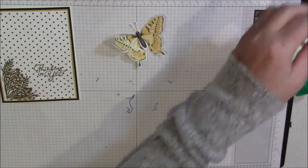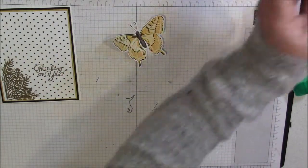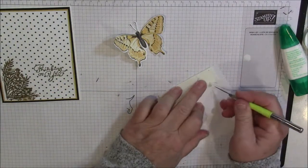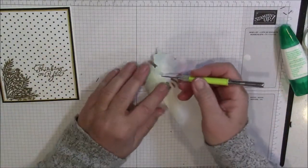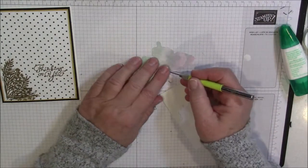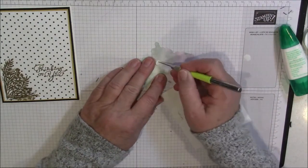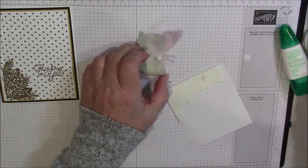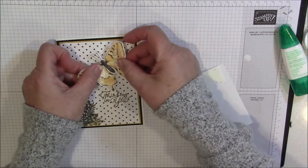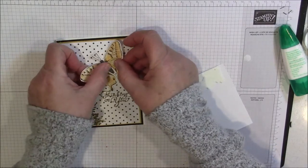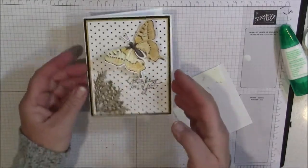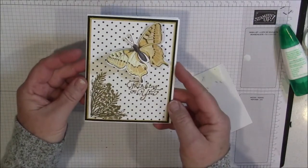Let's grab our mini Stampin' Dimensionals. And we'll adhere two of these on there. And we will put this up in this corner. So how quickly this card goes together, you didn't have to color your butterfly. Just like that. Isn't that gorgeous?